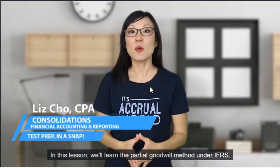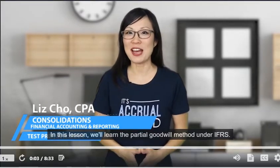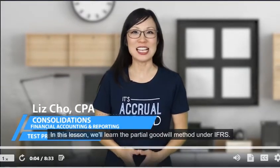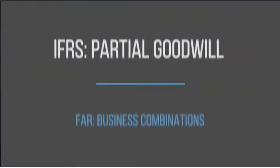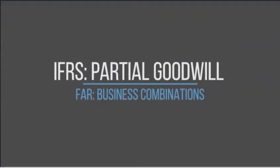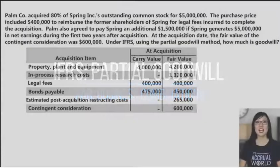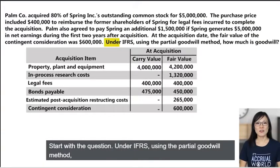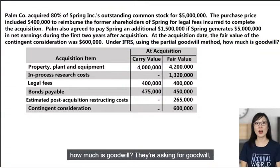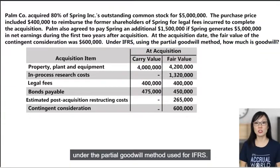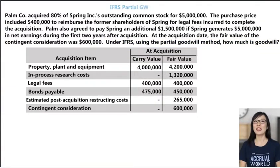This lesson will cover the partial goodwill method under IFRS. Let's see how this works with an example. Starting with the question: under IFRS using the partial goodwill method, how much is goodwill? They're asking for goodwill under the partial goodwill method used for IFRS.